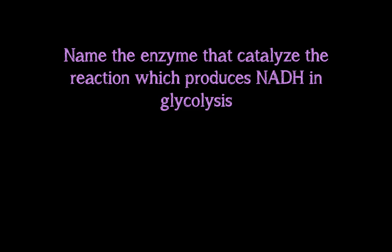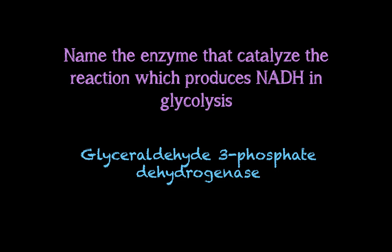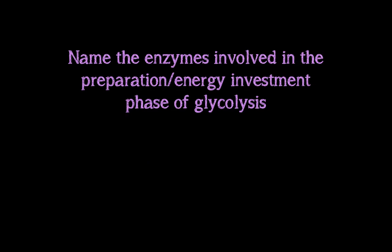The enzyme that produces NADH in glycolysis is glyceraldehyde-3-phosphate dehydrogenase. Now, name the enzymes involved in the energy investment phase of glycolysis. Remember, glycolysis can be split into two phases: the energy investment phase and the energy payoff phase. For the energy investment phase, you should have named the first five enzymes in the glycolytic pathway.